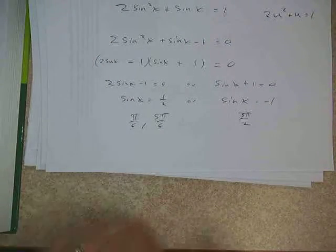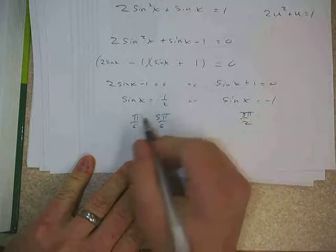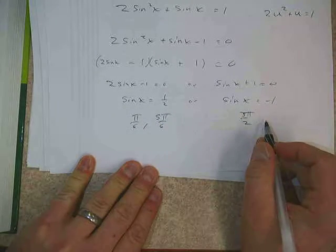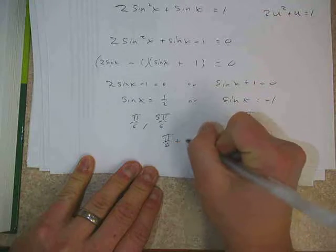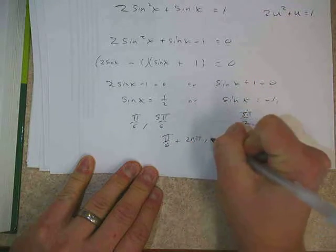Now the bigger issue, though, is how do we generalize this? Because that's only three solutions, and this thing has infinitely many solutions. So how do we generalize that? These would be the solutions between 0 and 2 pi. So if they asked for that, we would just give those three.